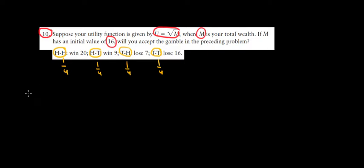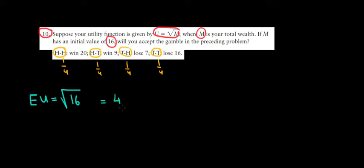When we want to decide between a gamble and a certainty, we have two options. Either not take the gamble — in that case our expected utility would be the square root of 16, because we would not win or lose anything, giving us a utility of 4 units for sure. But if we take the gamble, we have to take into account all these probabilities.